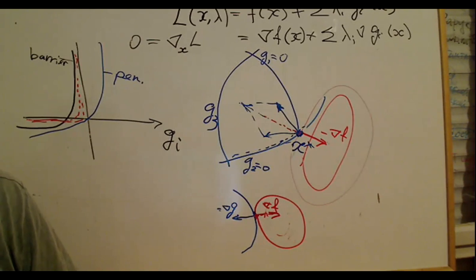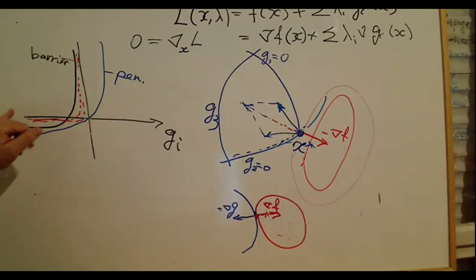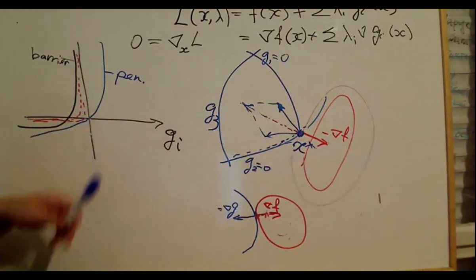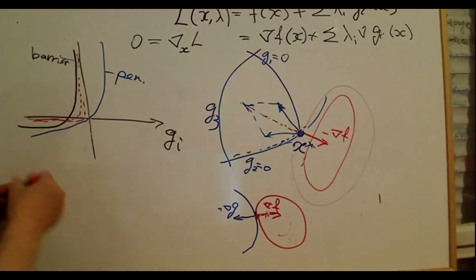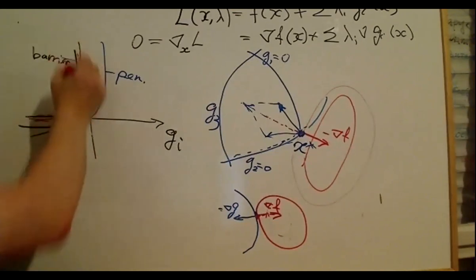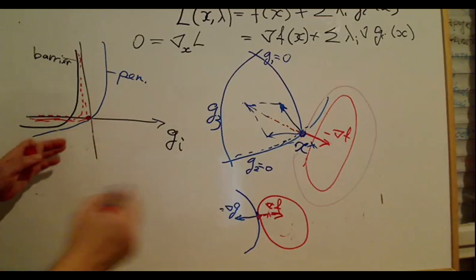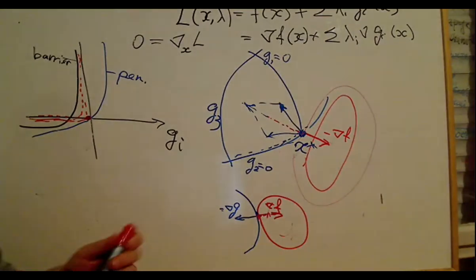Regarding the combination of active constraints and the barrier method: in the barrier method we cannot actually reach the point where g_i equals zero, but we are approaching it. As the penalty parameter becomes very large — say 1 million — the barrier explodes very close to the origin of the constraint, so numerically you become very close to the solution. The barrier method thus approaches the boundary from inside.